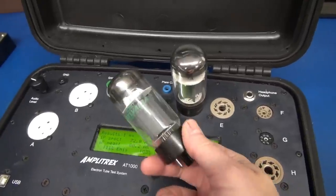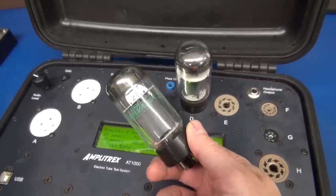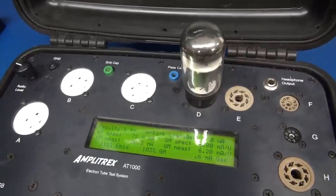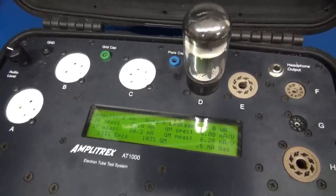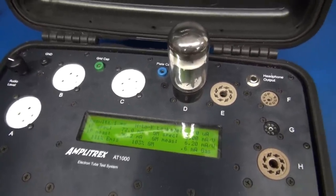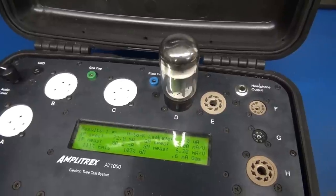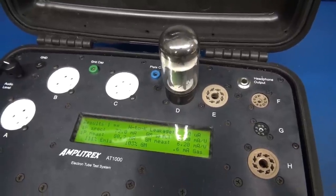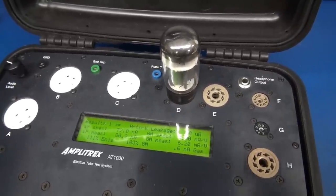Both of the nice Sylvania 6L6s that were installed in this Bassman checked just fine on an Ampetrax AT1000. So that rules out the tubes. Let's do a visual inspection, and if that fails, we'll measure some voltages.